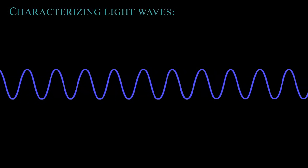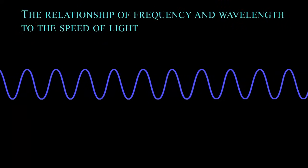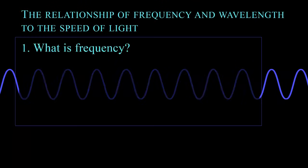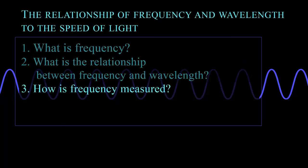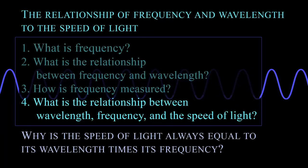Hello. In this video, we are going to characterize an aspect of light waves by looking at what frequency and wavelength are and how they are related to the speed of light. First, we need to understand what frequency is, frequency's relationship to wavelength, how frequency is measured, and finally, how frequency and wavelength are related to the speed of light. After all that, we should be able to see why the speed of light is always equal to its wavelength times its frequency, and gain some insight into the beauty of mathematics to describe nature.